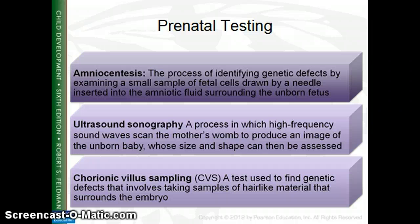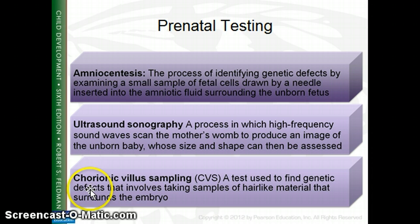Ultrasound uses sound waves to produce an image of the unborn child, and as far as anyone knows, ultrasounds have no risk factors. Chorionic villus sampling also involves taking something from inside the body, so there is a slight risk, but it takes samples of the hair-like material that surrounds the embryo.